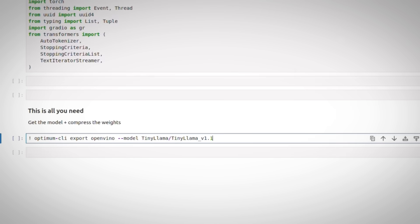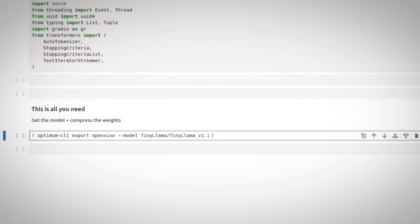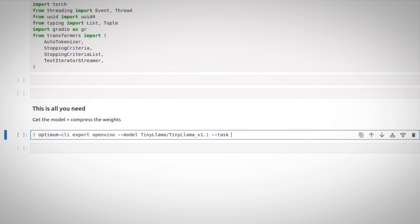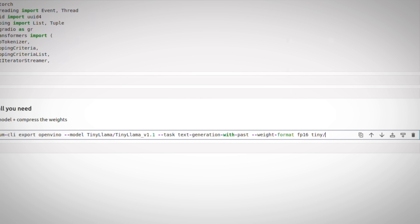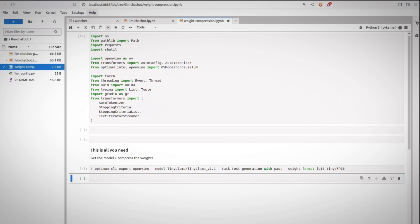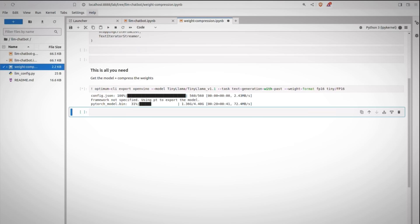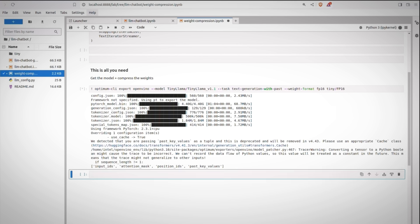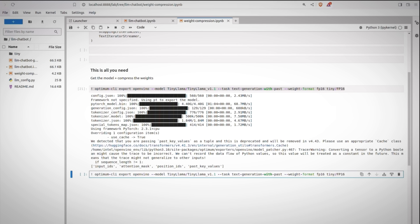So let's download the tiny llama model. This is the task I'm doing: text generation with past. I'll ask for weight format at FP16, and I'll place the model in this directory. It will bring the model and convert it, if a conversion is required, one line of code. And it is here.